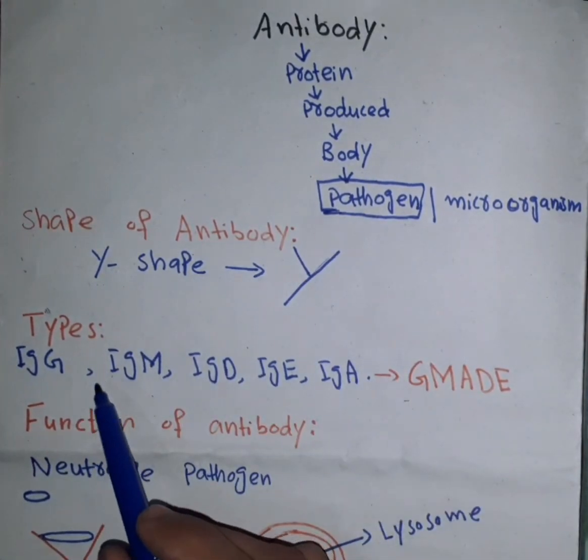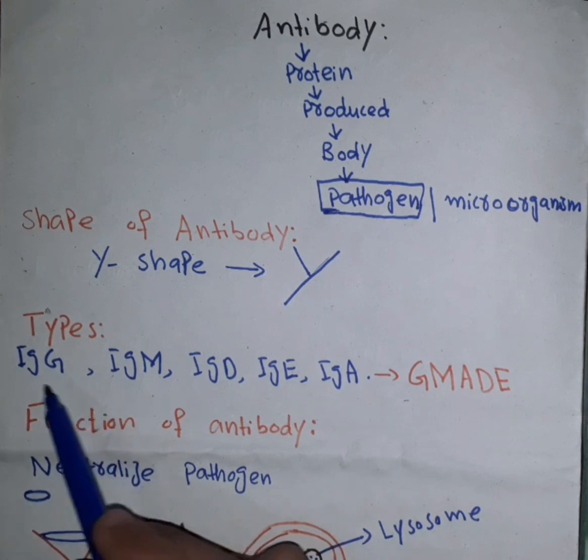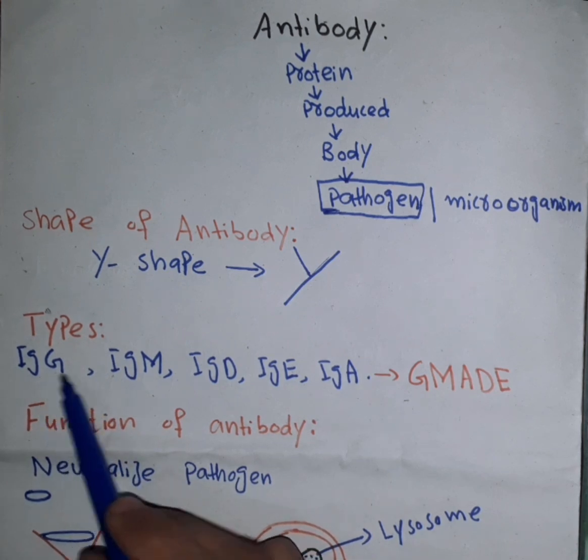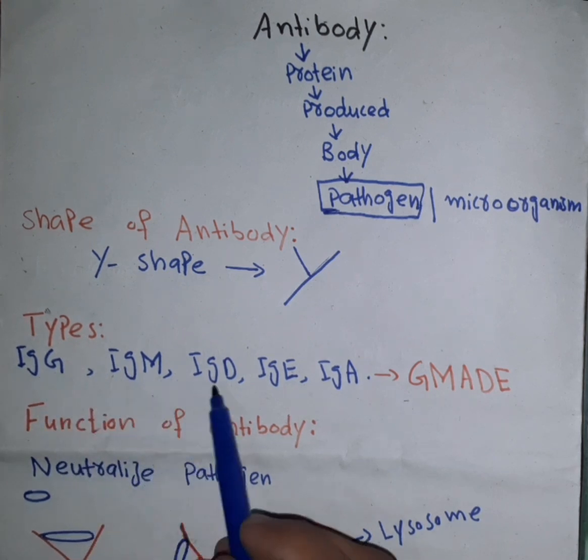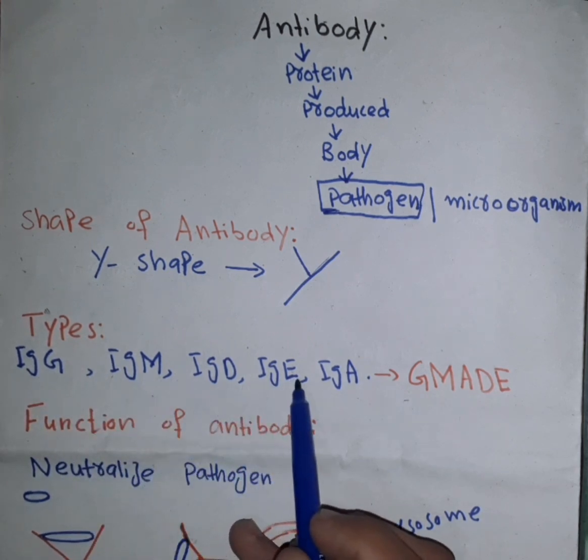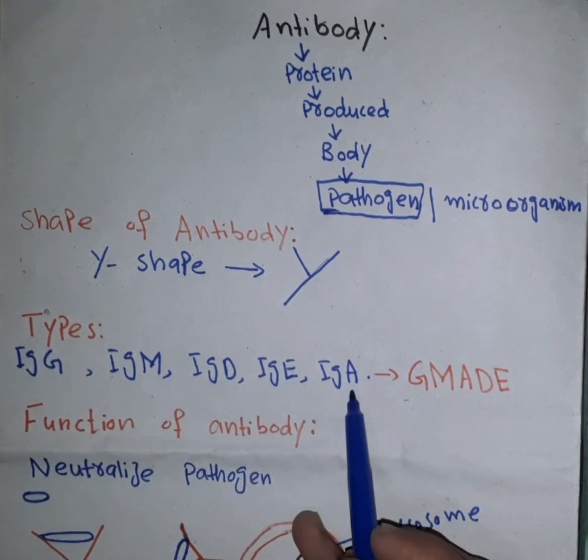Types. The antibody must have five types: IgG, IgM, IgD, IgE, and IgA.